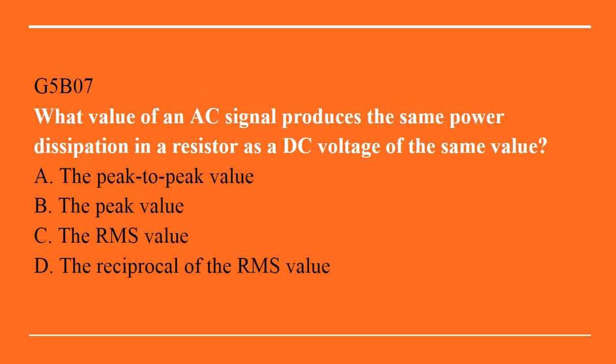G5B07: what value of an AC signal produces the same power dissipation in a resistor as a DC voltage of the same value? A. The peak-to-peak value. B. The peak value. C. The RMS value. Or D. The reciprocal of the RMS value. Answer is C: the RMS value.